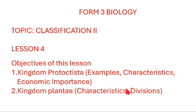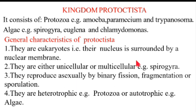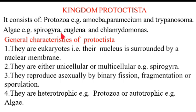To begin with, Kingdom Protoctista — examples include: Protozoa, e.g. we have Amoeba, Paramecium, and Trypanosoma. We also have Algae, e.g. Spirogyra, Euglena, and Chlamydomonas.